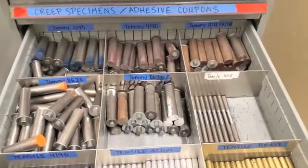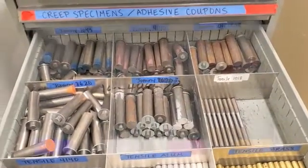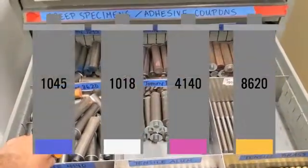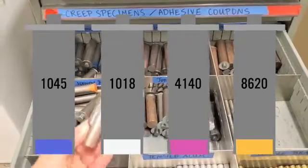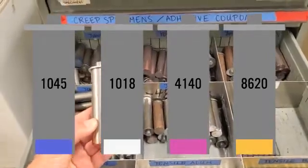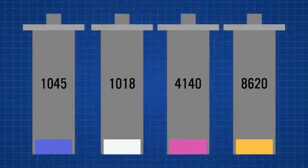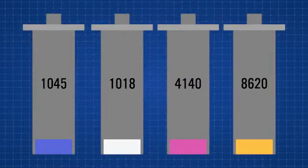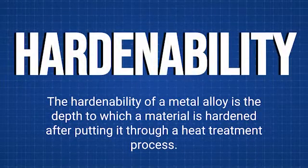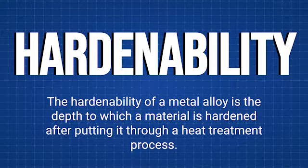In this lab we will be working with 4 different kinds of steel: 4140, 8620, 1045, and 1018. Each one of these specimens has distinct carbon content and additives, making them have slightly different properties. The main property covered here is hardenability, or the depth at which a material can be hardened by heat treatment.